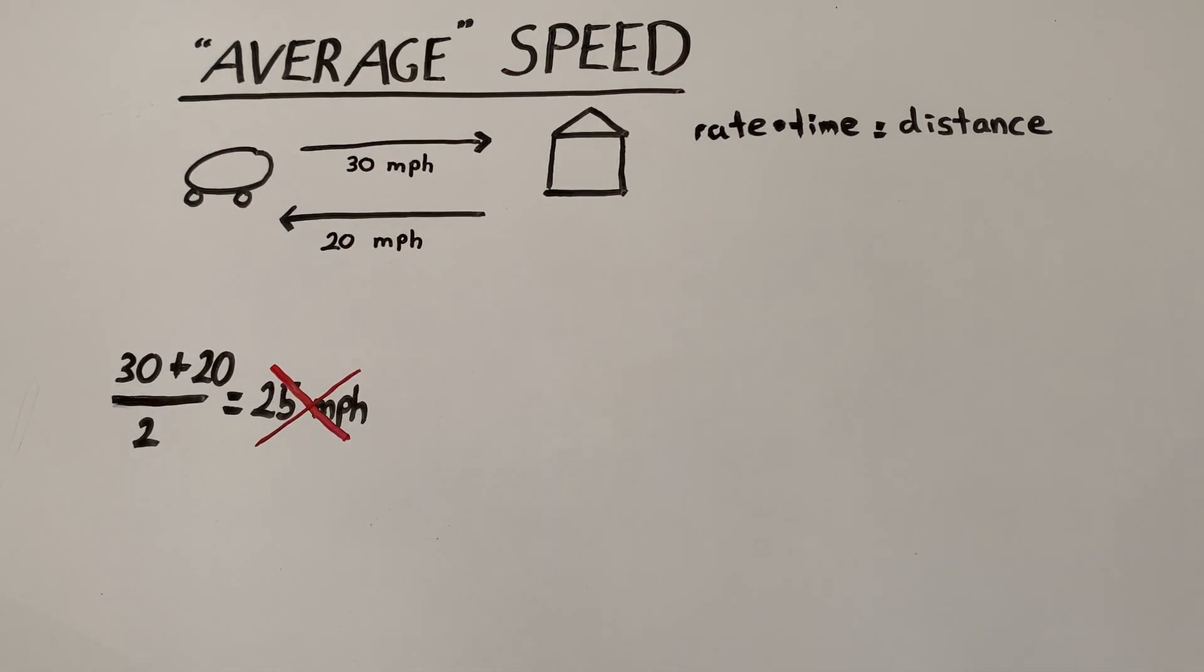Now, to find the average speed, we're going to need to find the total distance and divide that by the total time. So first, let's focus on the total distance. What is the total distance of this entire trip?